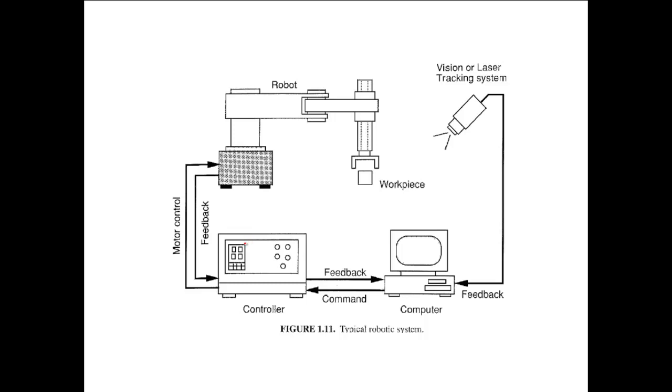Now, if we see this figure, this is from Lung Winsai book. This talks about the various components, or you can say major components in a robotic system. You have a robotic arm, or the manipulator, which is this one. You have the work piece, which is to be manipulated. This is the end effector of the robot. These are the robot links. These are the joints. This is the base. So, this is the mechanical part.